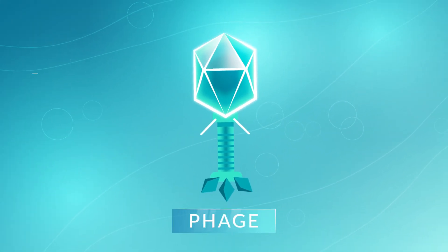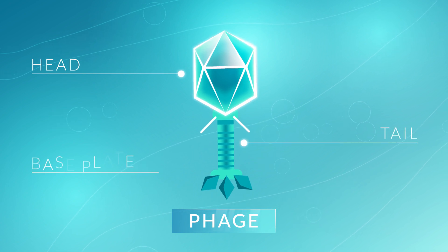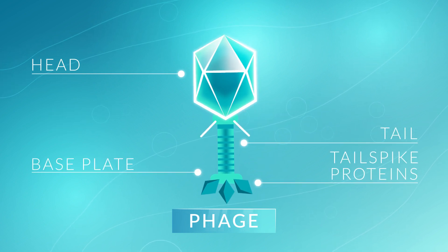They are looking at phages that consist of a head, a tail and a base plate, where the so-called tail spike proteins are attached.